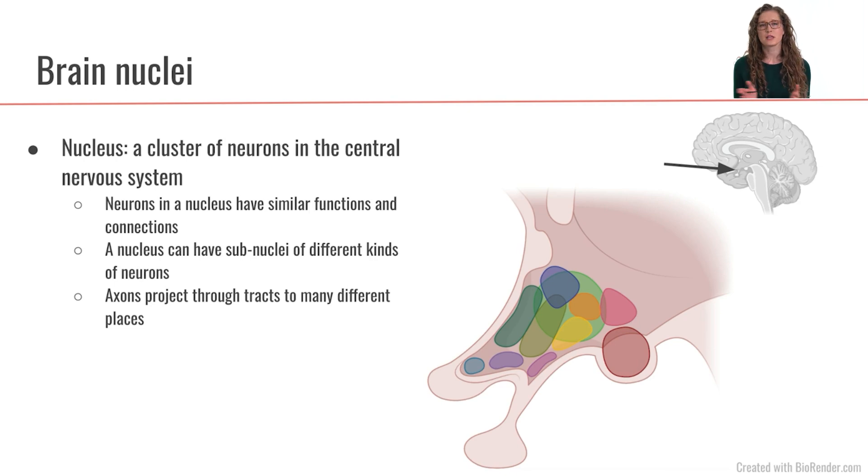You are most likely familiar with nuclei or a nucleus already just from understanding the general anatomy of a cell. So in a cell we have a nucleus. The nucleus contains the DNA of the cell. When we're talking about the brain though, the nuclei has a bit of a different meaning.